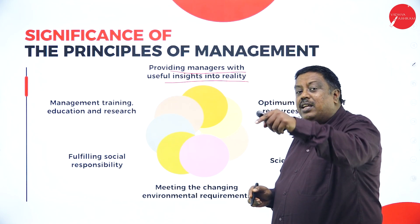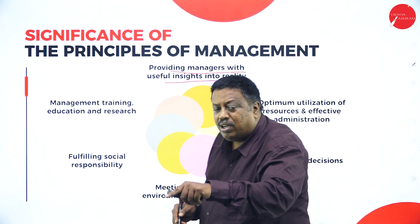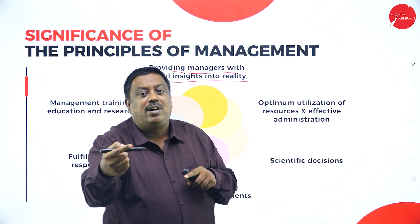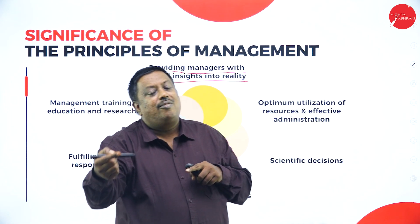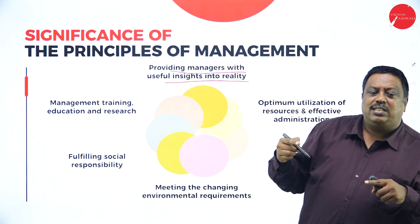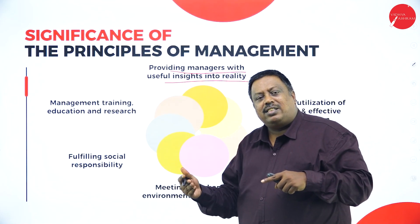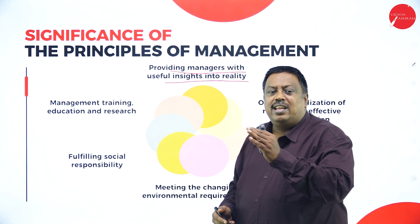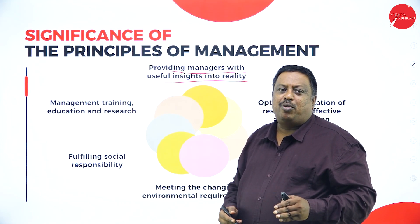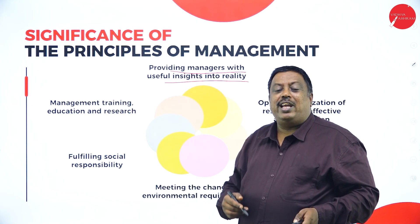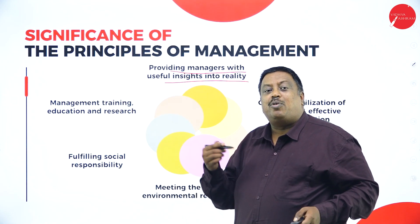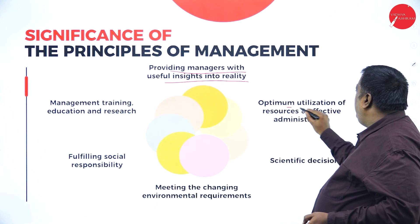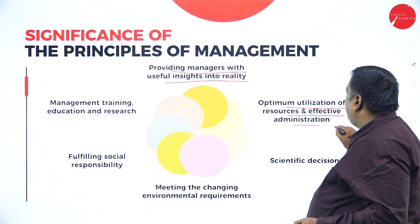By understanding that a particular action will cause damage or impact, managers are guided to think twice or thrice before doing such activities. This makes it easy to use concepts in the business process and execute work within departments, making subordinates work effectively. The second significance is optimum utilization of resources and effective administration — using all available resources in the organization properly and extracting maximum benefit from those resources.